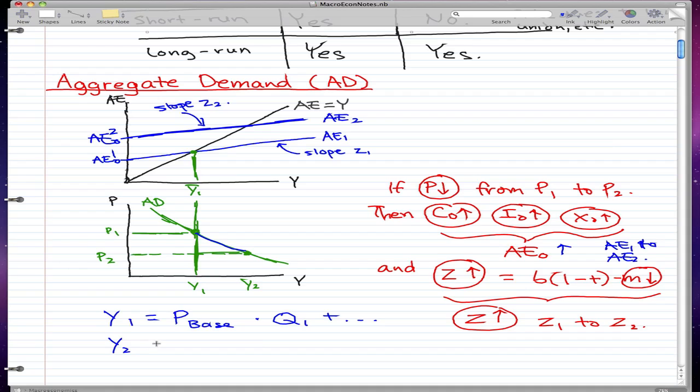Y2 is P base times Q2 plus and so on. The reason why we're using base numbers and not the same price from the same year is because nominal prices don't tell much.